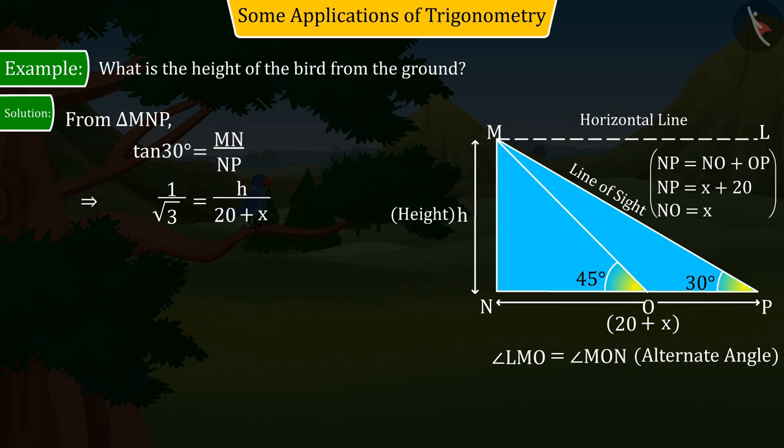On substituting the values of sides MN and NP in tan 30 degrees and solving it, the value of h is obtained as 20 plus x by square root of 3, which is not a complete solution because here the value of x is unknown. Let us represent it by equation 1.